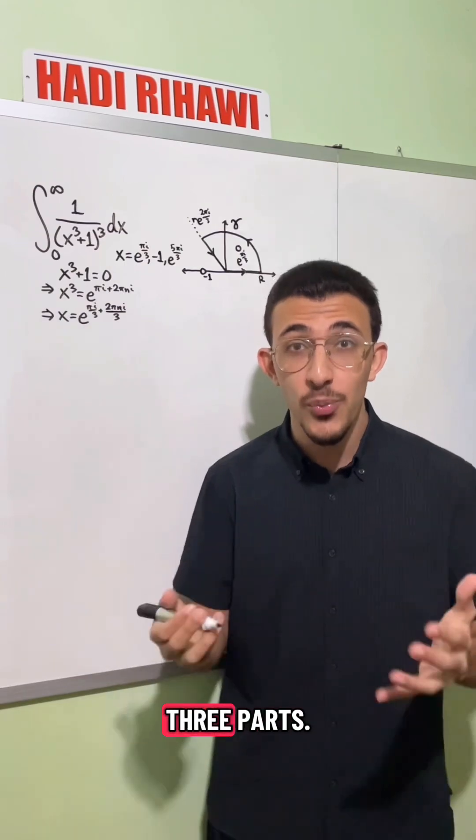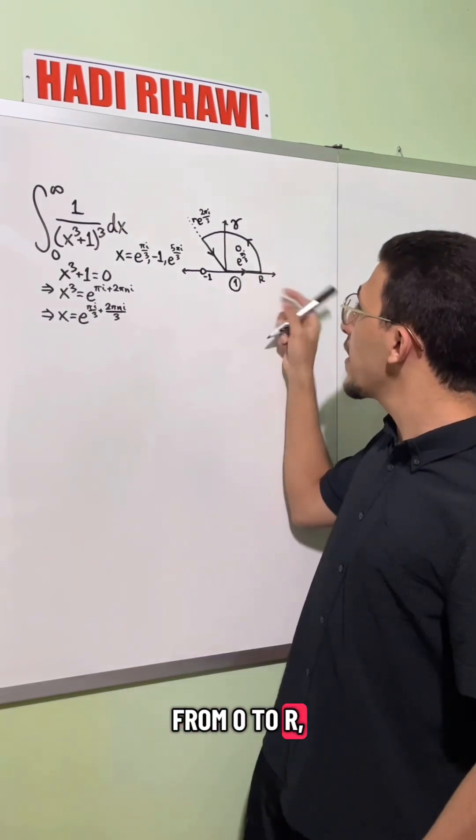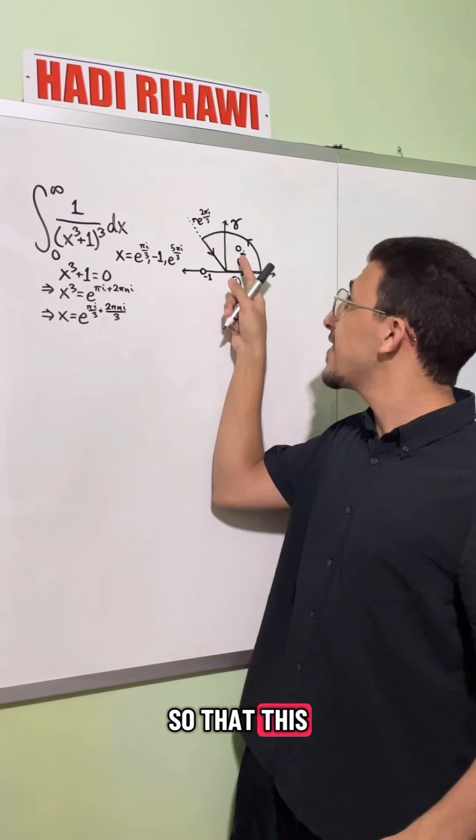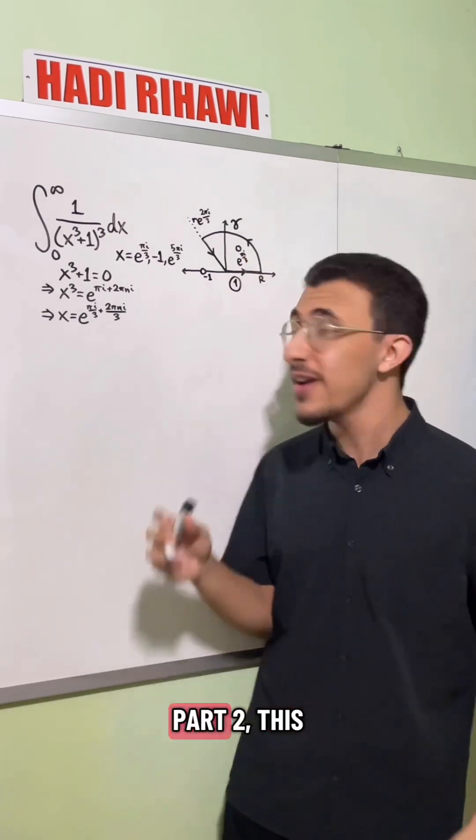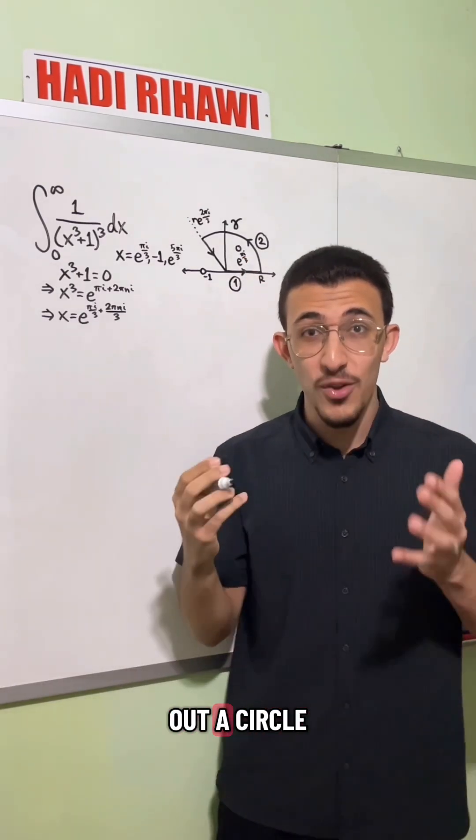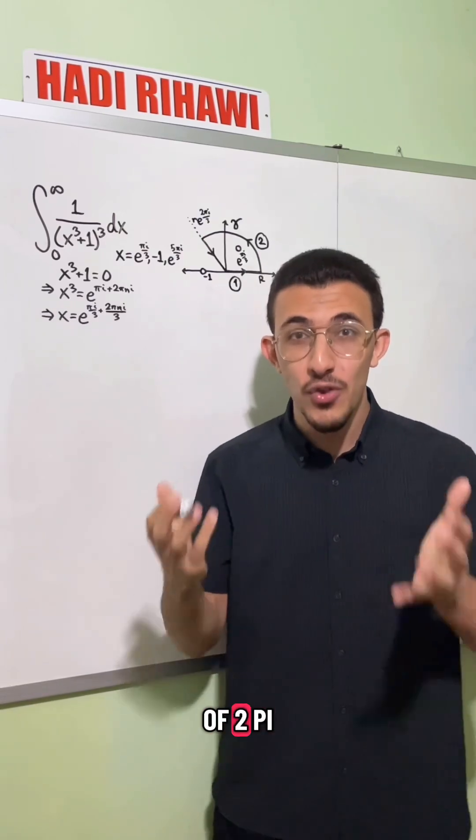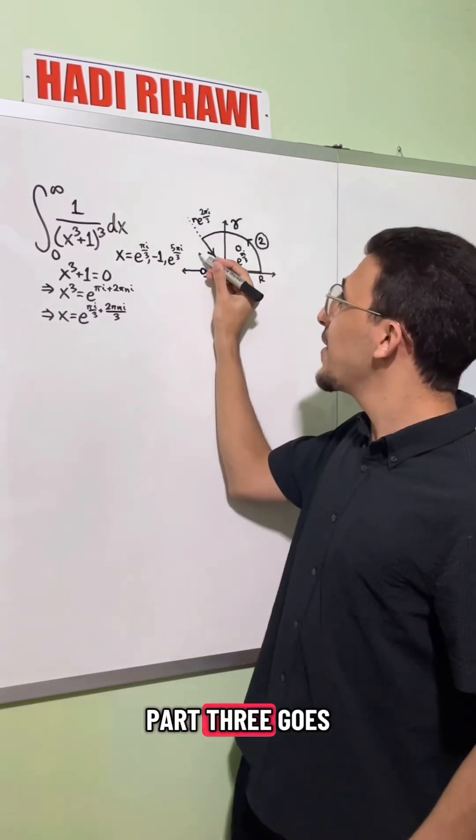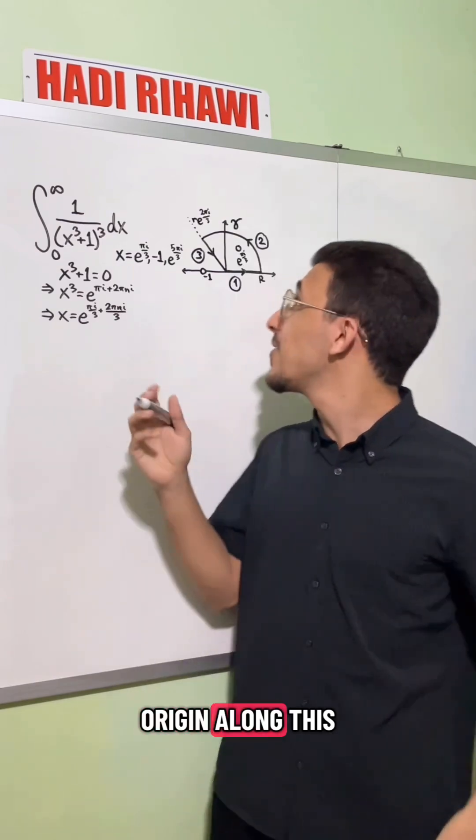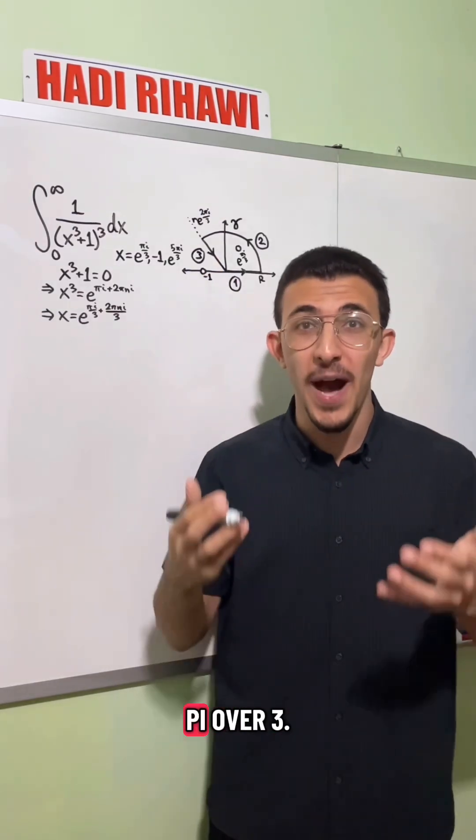So our contour has three parts. One that goes from zero to r, where r is bigger than one, so that this pole is contained in the contour. Part two, this arc that traces out a circle and goes out to an angle of two pi over three radians. And then finally, part three goes back to the origin along this line at an angle of two pi over three.